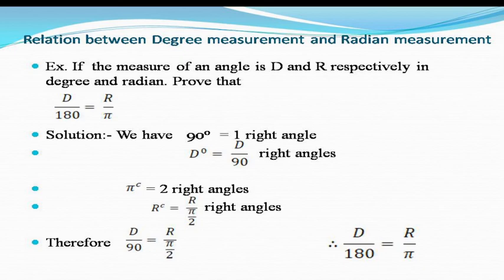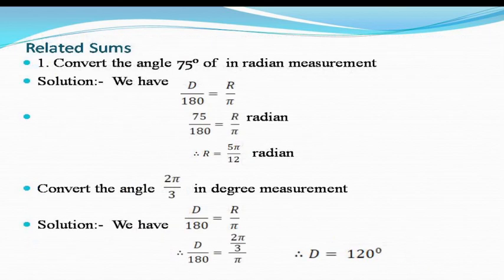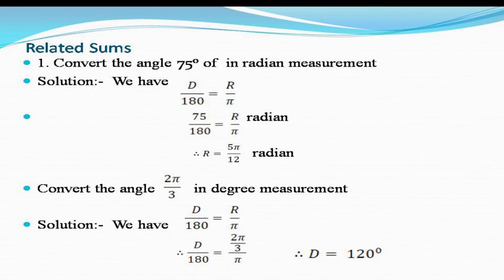Let's apply this. To convert 75° to radians: using D/180 = R/π, substitute D = 75, and on simplification we get R = 5π/12 radians. Similarly, to convert 2π/3 radians to degrees: substitute R = 2π/3 in the relation, and on simplification we get D = 120°. In this way we can convert between the two measurements.